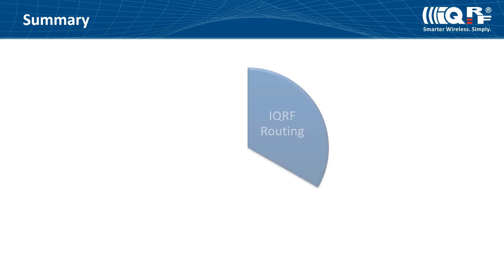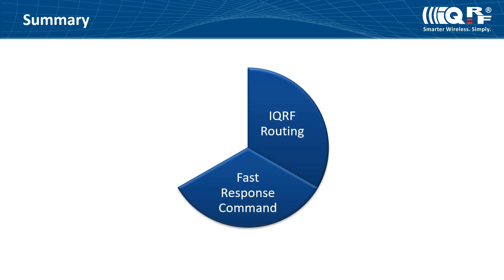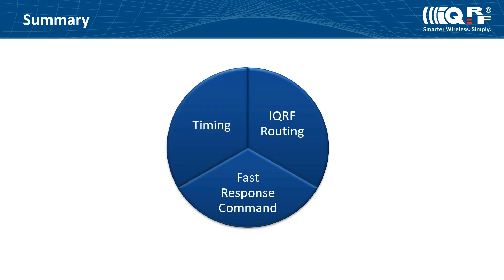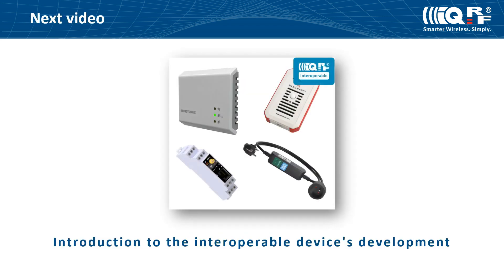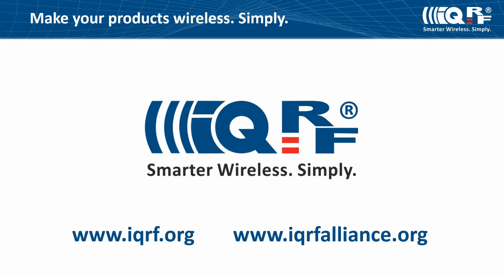Now you have learned how routing in IQRF networks works, what is the FRC command and how it really shortens the time for command execution. You can very quickly collect data from your devices or control your devices like a group by sending these commands. You should understand what effect the type of the IQRF network has on timing and on the speed of data transmission. In the next video, we will explain the difference between an IQRF interoperable device and a non-certified device and how the hardware profile ID is related to certification. To learn more about the technology, you can browse IQRF.org or watch other IQRF videos or find already existing projects on IQRFAlliance.org. Make your products wireless. It's simple. Thank you.